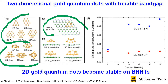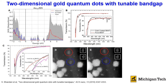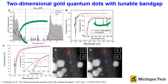This means 2D gold quantum dots become stable on boron nitride nanotubes. We have used UV-visible spectroscopy to characterize the differences between the transmission spectra of pure boron nitride nanotubes, indicated by the red curve, as compared to those coated with gold nanoparticles, shown by the black curve. When the 2D gold quantum dots are coated on boron nitride nanotubes, we start to see sharp absorption bands, indicating that those gold quantum dots are semiconducting particles with optical bandgap in the visible range.